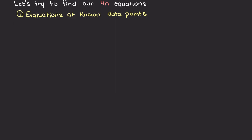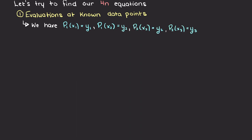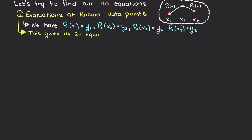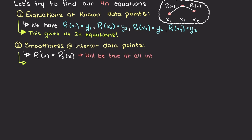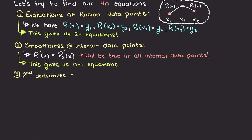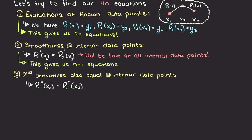Let's find our 4n equations. Firstly, we have known data points — input-output pairs we are interpolating through. Because each data point will share a spline, we actually get 2n equations. Therefore we just need to find 2n more equations. For our intermediate data points, we can define continuity and say the first derivatives need to be equal at every interior data point, giving us n-1 equations. Likewise, we want our interior data points to also have equal second derivatives, giving another n-1 equations. This leaves us with 2 missing equations.